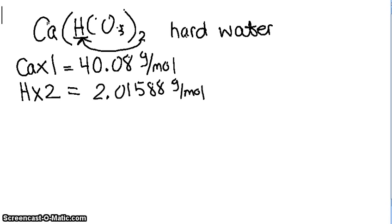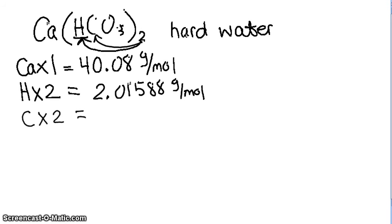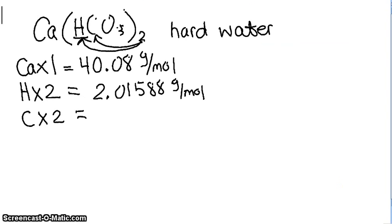Your 2 also applies to your carbon. So you have carbon times 2. The molar mass of carbon is 12.01. So 12.01 times 2 is 24.022 grams per mole.